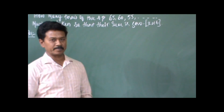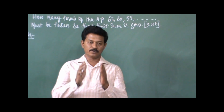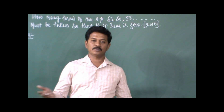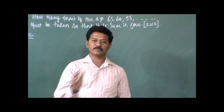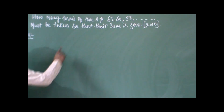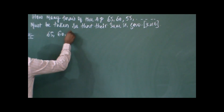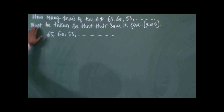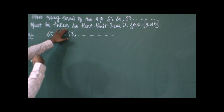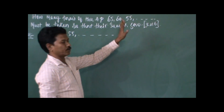Next very important problem, asked in CBSE 2016 final exams. Problem 2: How many terms of the AP 65, 60, 55, ... must be taken so that their sum is 0? The AP is decreasing — it goes positive, reaches 0, then goes negative. For the sum to be 0, the positive terms must cancel the negative terms.